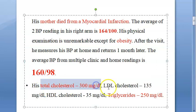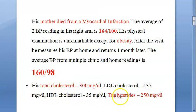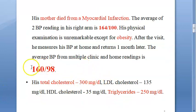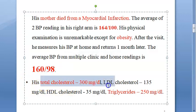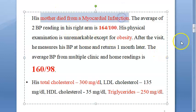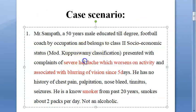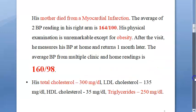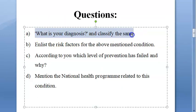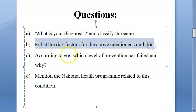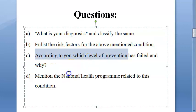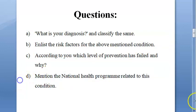His cholesterol results: total cholesterol, LDL cholesterol, HDL, and triglycerides have all been given. Now you have to come to a conclusion. As you can see, blood pressure is very high, total cholesterol is high, triglycerides are high, he is obese, his mother died of myocardial infarction, and his symptoms of headache and blurring of vision have come because of high blood pressure. So what is your diagnosis? Classify the hypertension.